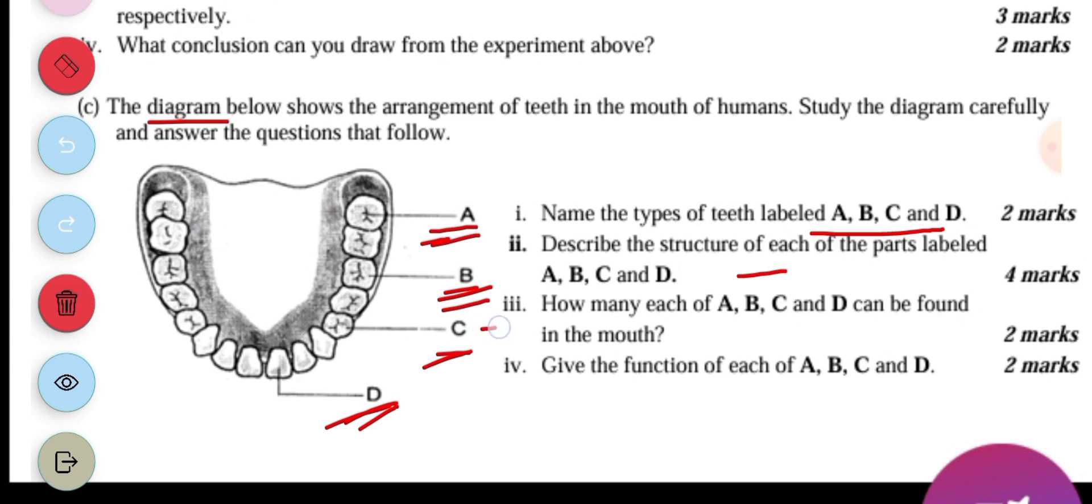So the next question is how many each of A, B, C and D can be found in the mouth. So starting with the incisor, there are eight in the mouth. You have four at the upper part of the mouth and four at the lower part. Then with the canine, the canine are four, two at the upper part and then two at the lower part.